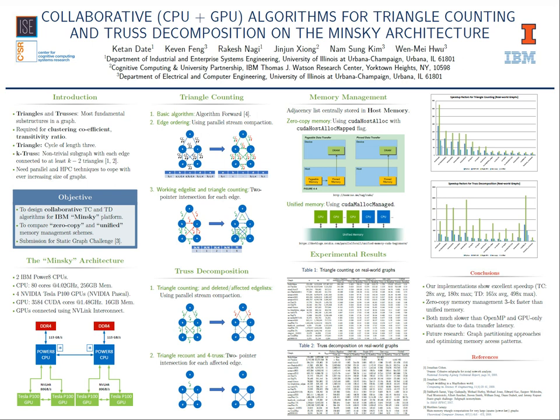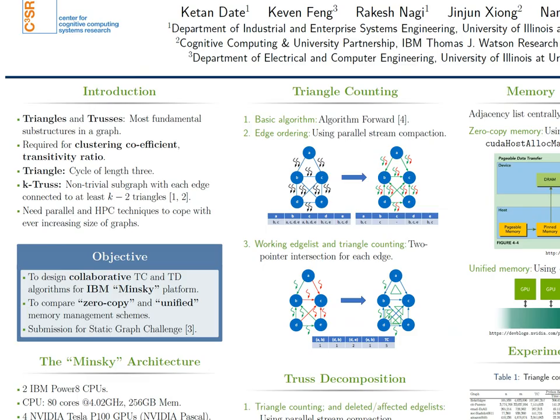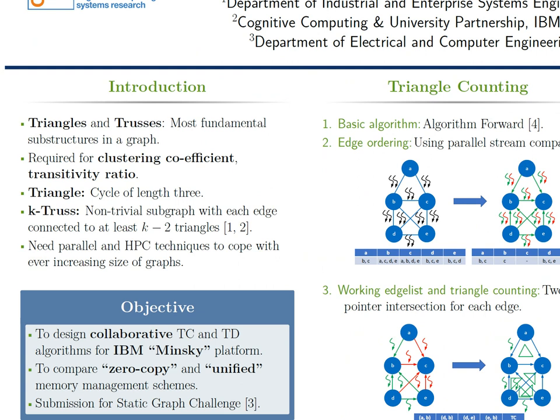The objective of this competition was to design algorithms which can perform triangle counting and truss decomposition in large graphs or networks. Triangles and trusses represent the most fundamental substructures in a network. A triangle is defined as a cycle of length 3, while k-truss is defined as a non-trivial subgraph in which each edge is connected to at least k-2 triangles. Triangle counting is to count all the triangles in the given network, while truss decomposition is to find all k-trusses for k greater than 2. Both tasks are extremely important in graph analytics for calculating various metrics that describe community structure in the given network.